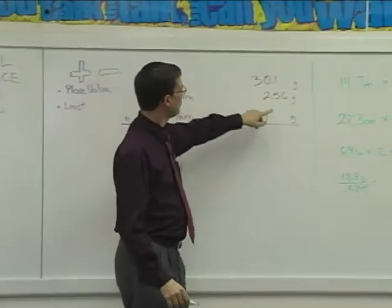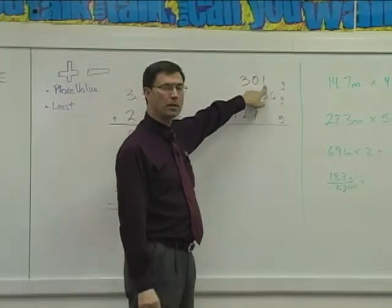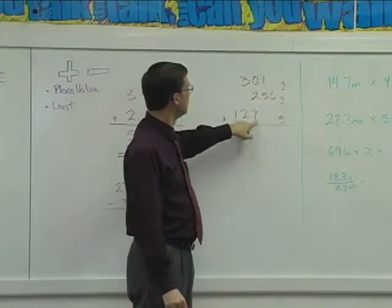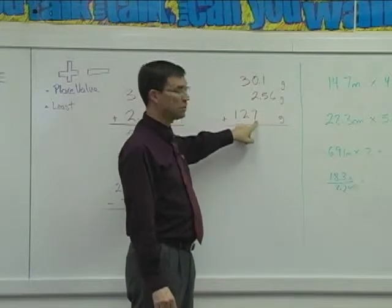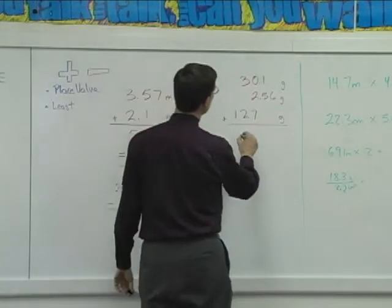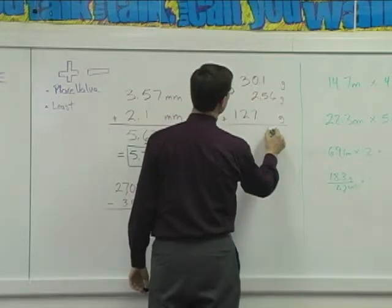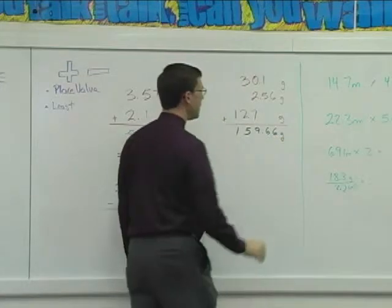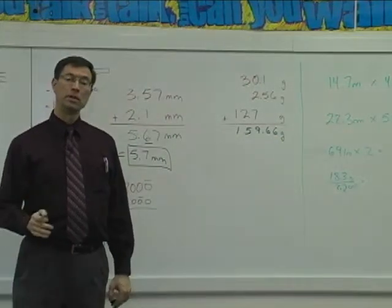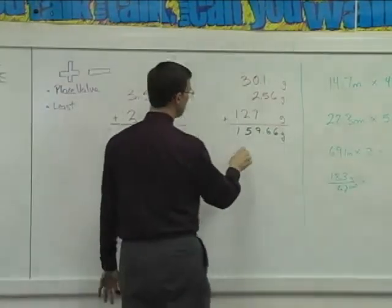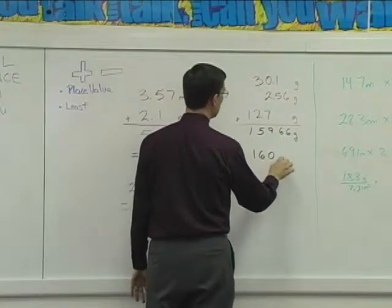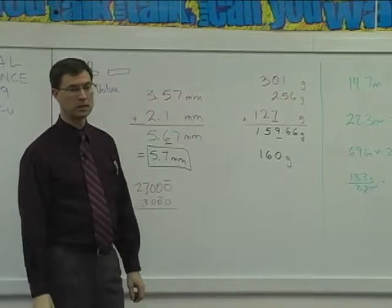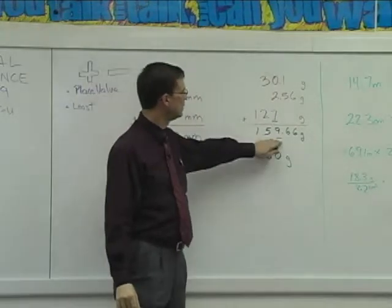Let's do this addition over here. This one has one digit in the tenths place. This one carries all the way out to the hundredths place. This one, there's no decimals. It's just to the nearest gram. So when I add these together, I need to round that to the nearest gram. So we're going to round this to 160, because this is the least accurate measurement. Least number of decimal places or least accurate measurement.